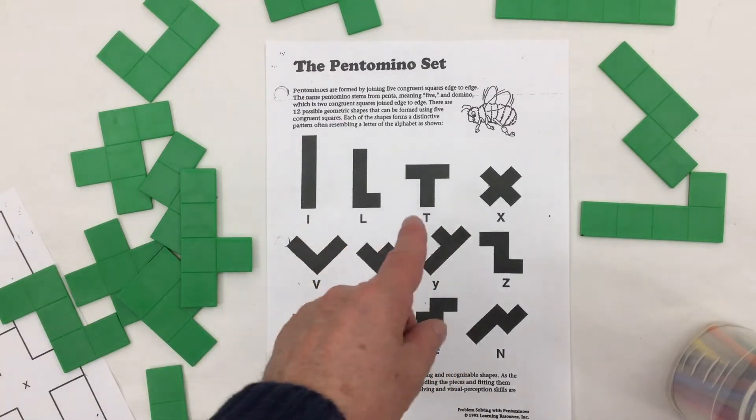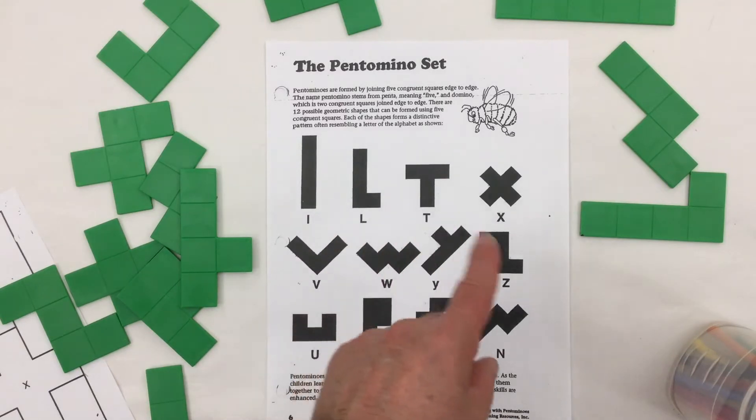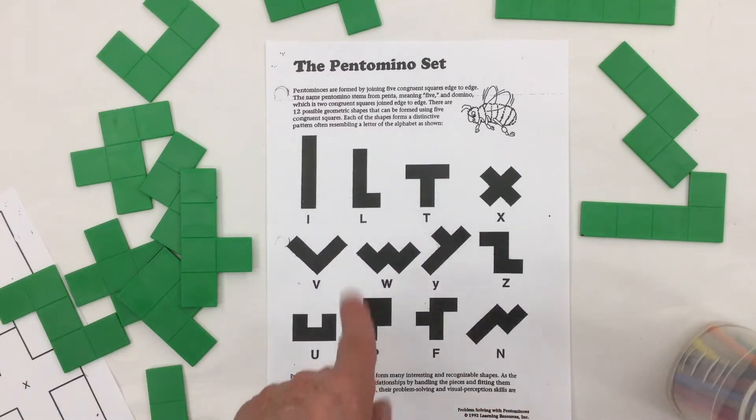So your I, L, T, X, the V, the W, the Y, the Z, the U, the P, the odd-looking F, and the N piece.